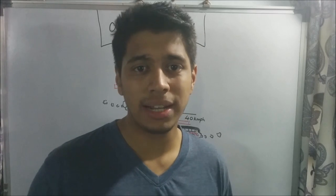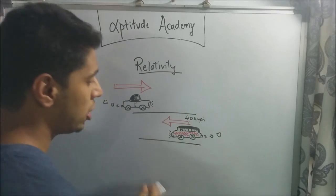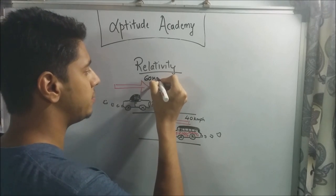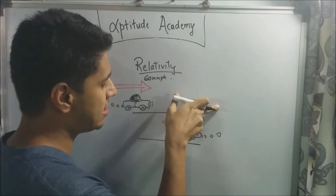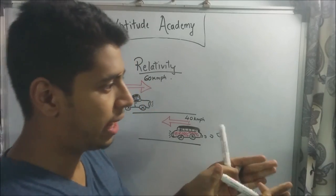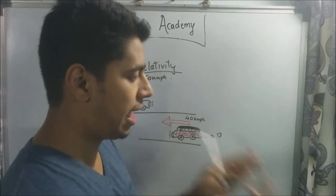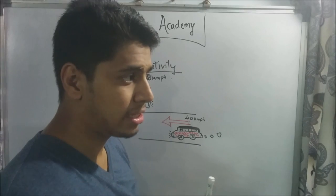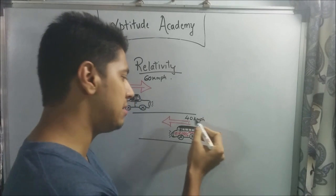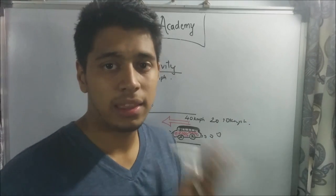Relativity is a very broad term, but let's see an example to understand train concepts. Suppose you're in a car on a highway going at 60 km/h, and a bus is coming from the opposite direction at 40 km/h. You've seen this — when a vehicle comes the other way, it looks much faster than it really is. You're sure it's not 60; it feels higher than 60. That's where the theory of relativity applies.